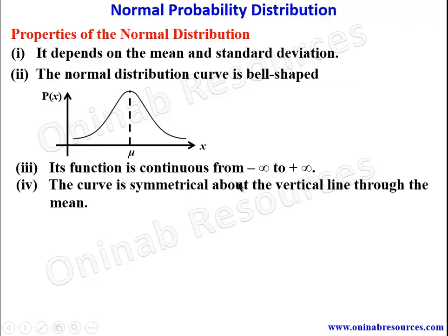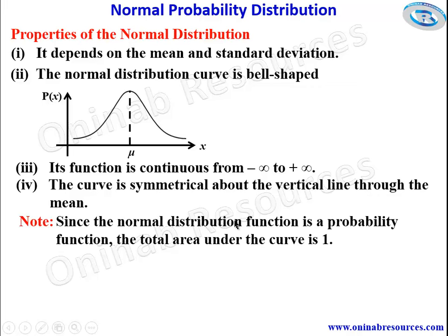The curve is symmetrical about the vertical line through the mean. This is the symmetrical line through the mean of the distribution. Since the normal distribution function is a probability function, the total area under the curve is 1. So the total area under this curve is always 1.